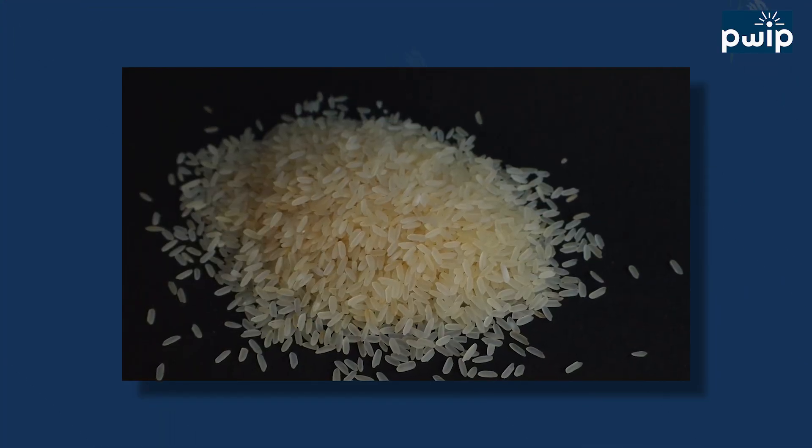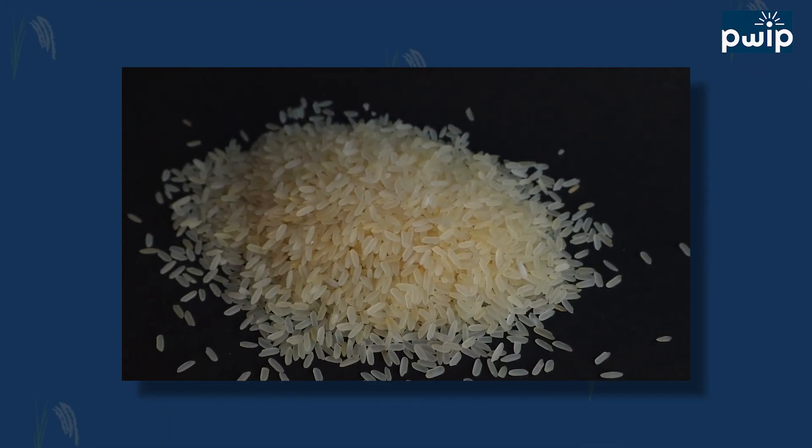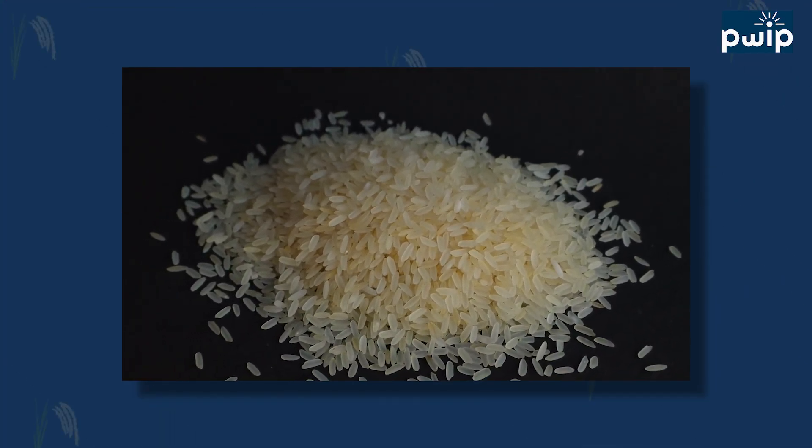Single dried rice always looks a bit creamier and a bit yellowish — because it is dried only once and the moisture is higher than double dried paddy, so it will always look yellow. But that doesn't mean it is lower quality — customers also have preferences.